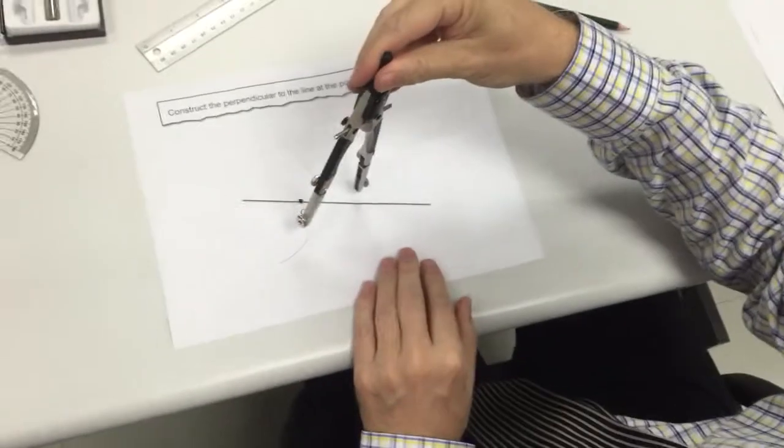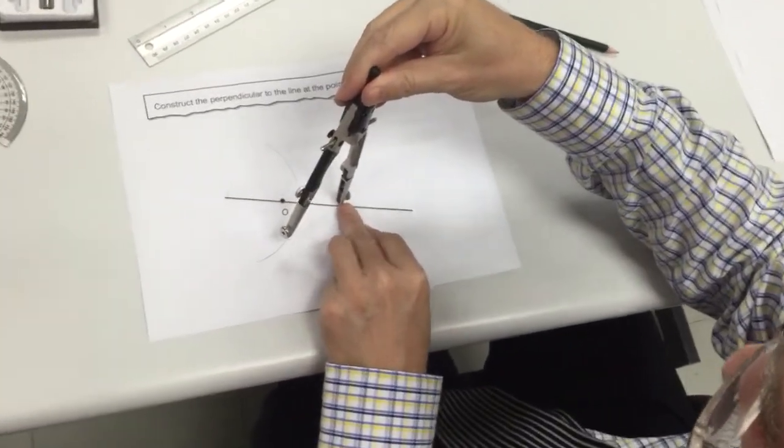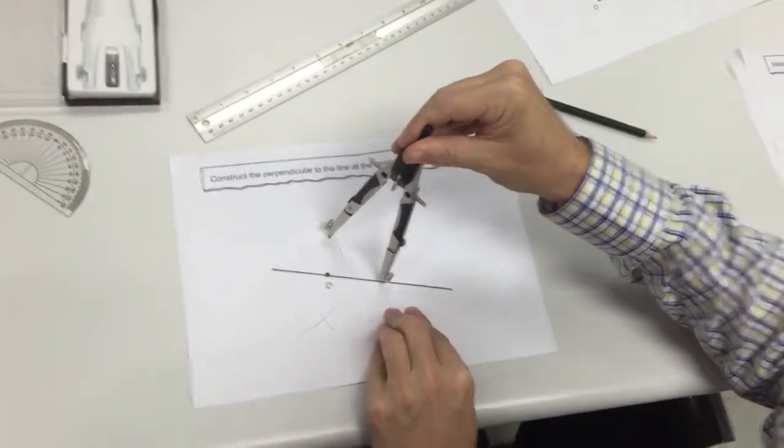And then with the same distance, put your point on the arc that you've made here. And draw an arc there, an arc there.